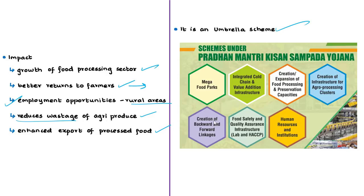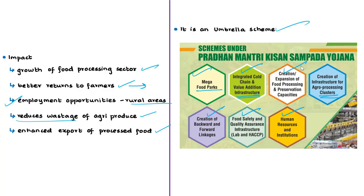This scheme is called an umbrella scheme because it incorporates other schemes of the Ministry, such as the Mega Food Parks Scheme, Integrated Cold Chain and Value Addition Infrastructure Scheme, Food Safety and Quality Assurance Infrastructure Scheme, and Human Resources and Institutions. These were already implemented under the Ministry, but are now under PM Kisan Sampada Yojana. New schemes were also incorporated, like Infrastructure for Agro Processing Clusters, Creation of Backward and Forward Linkages, and Creation/Expansion of Food Processing and Preservation Capacities.